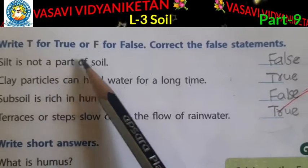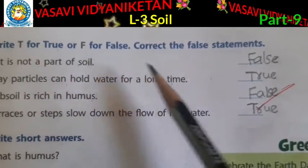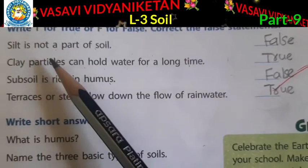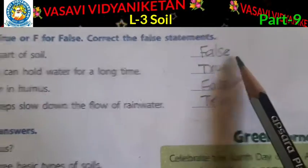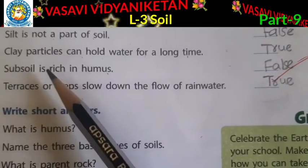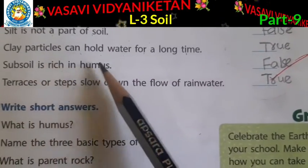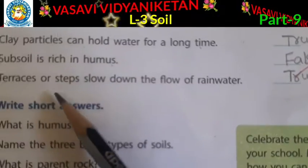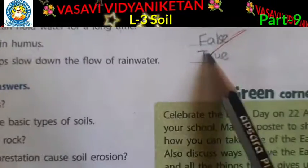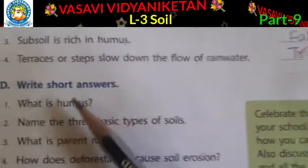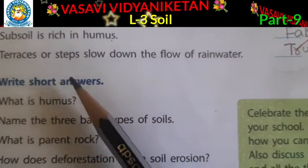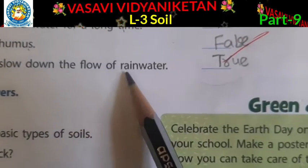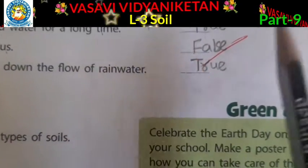Review: Write T for true or F for false, and correct the false statements. Silt is not a part of soil — False. Clay particles can hold water for a long time — True. Subsoil is rich in humus — False. Terraces or steps slow down the flow of rainwater — True.